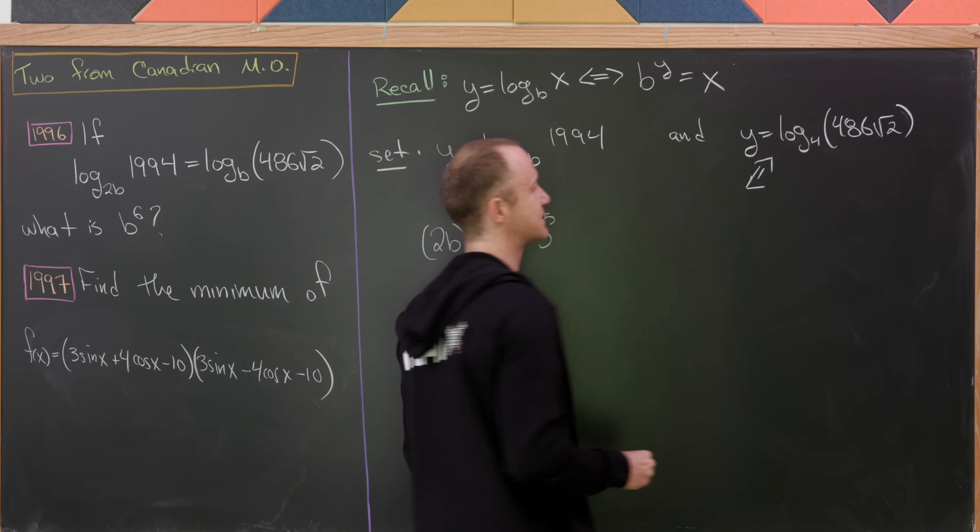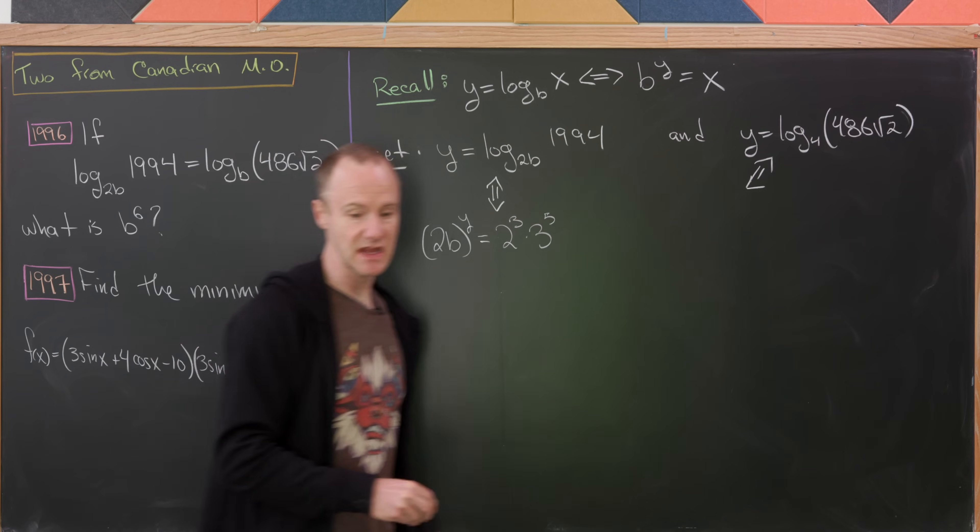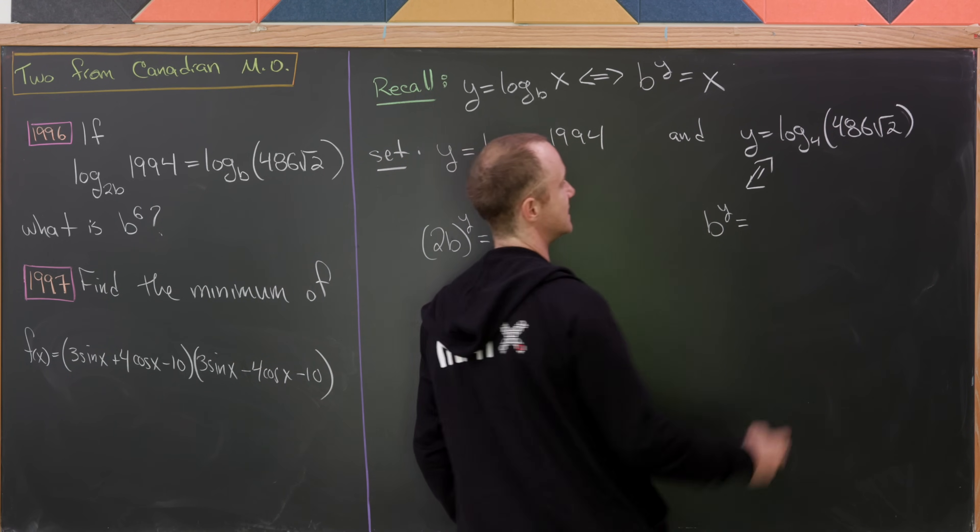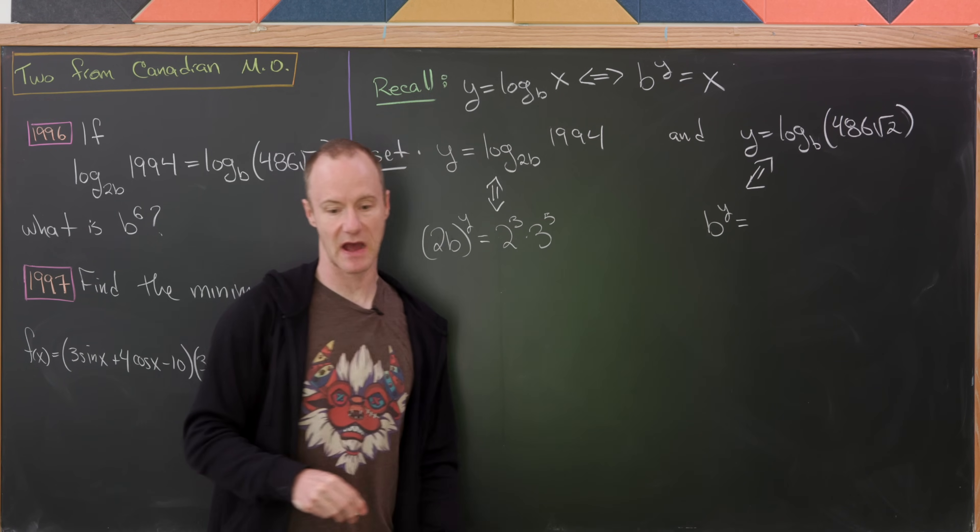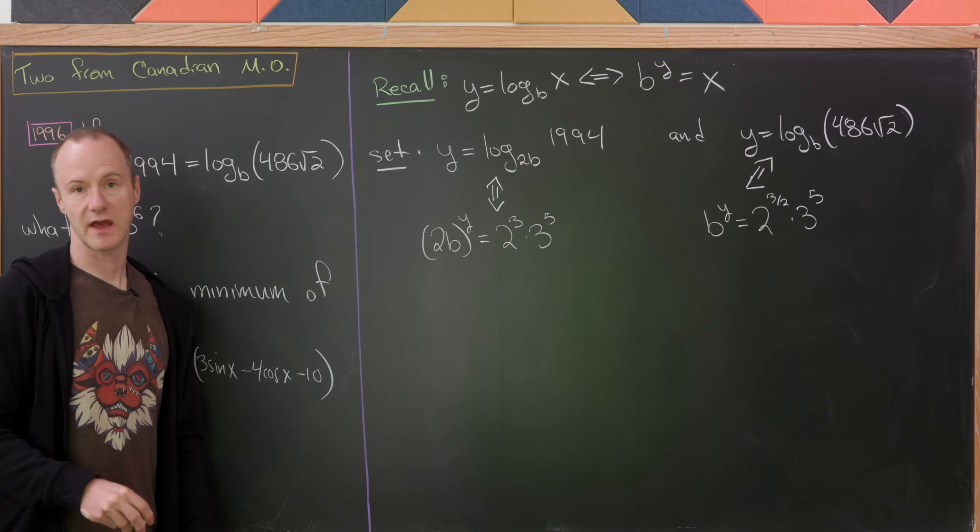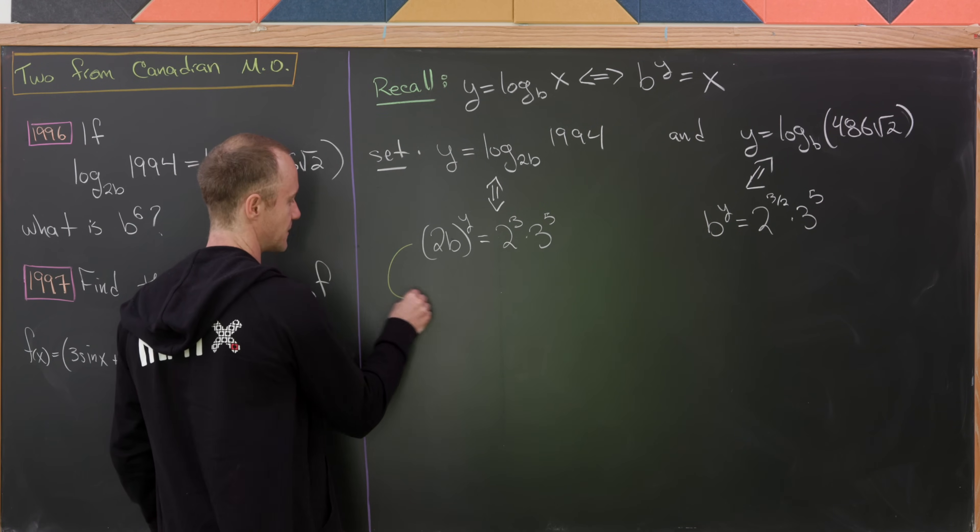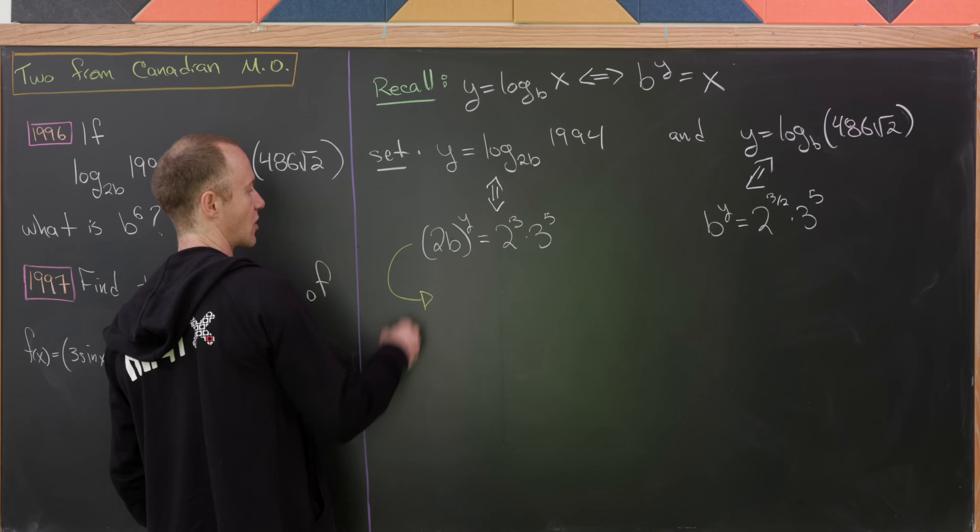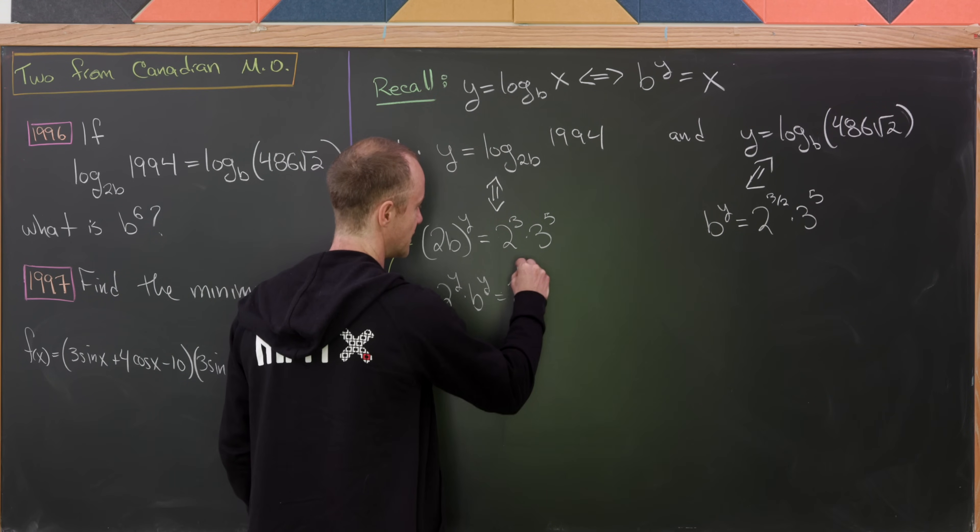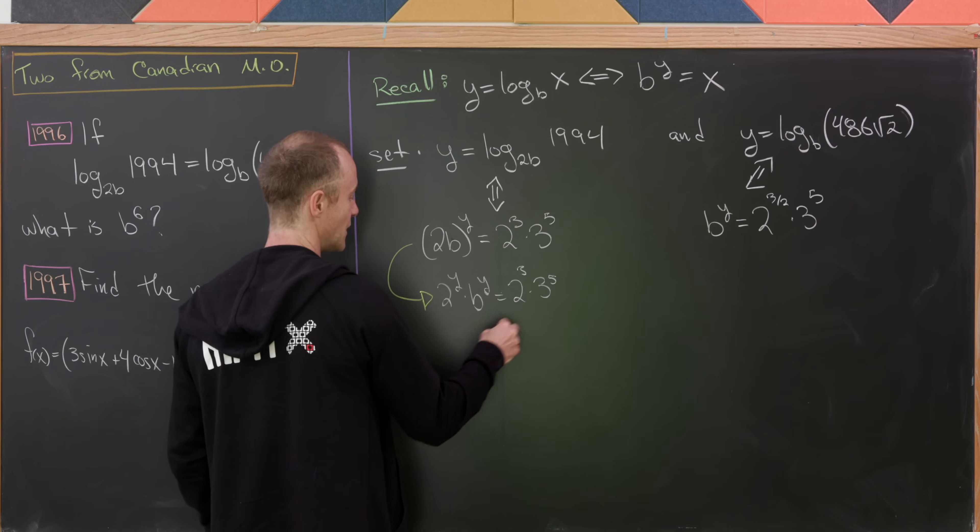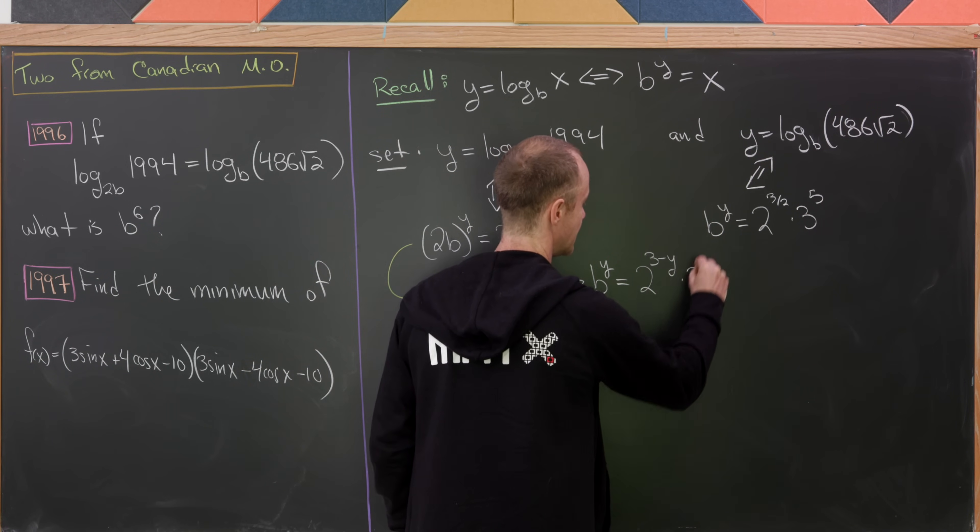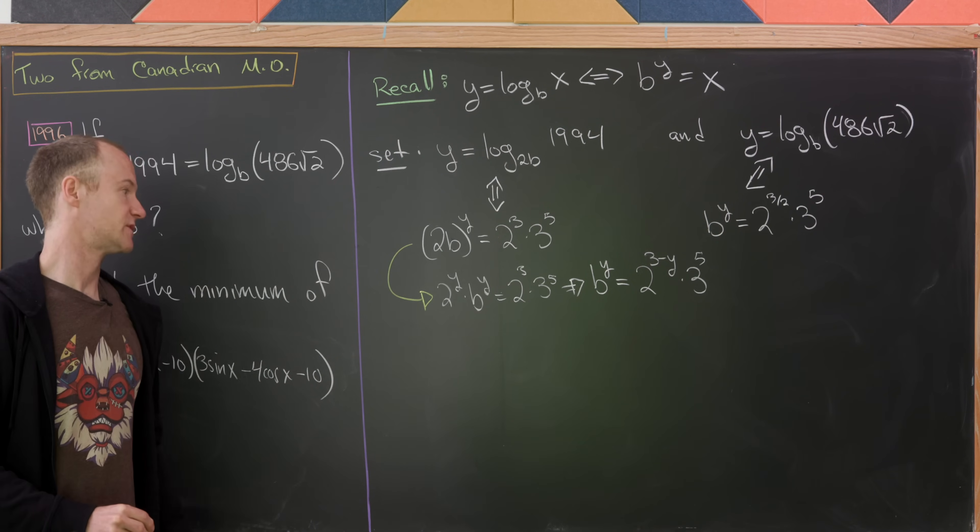And then we'll do the same thing here, we'll transport this to its exponential version. And that's going to give us b to the y power is equal to, oh, that should be a log base b here. So b to the y power is equal to 2 to the 3 halves times 3 to the 5th. But now let's maybe distribute this y across the two terms of the product. That'll give us 2 to the y times b to the y equals 2 cubed times 3 to the 5th, which is going to give us b to the y equals 2 to the 3 minus y times 3 to the 5th. There we just divided by 2 to the y.